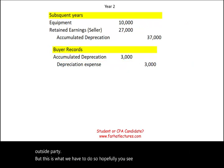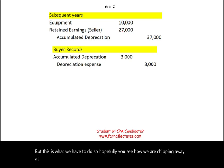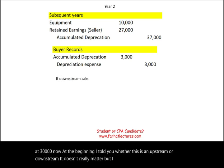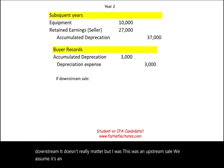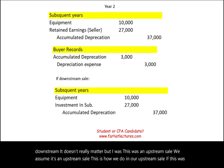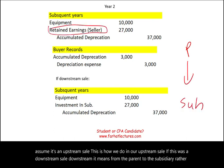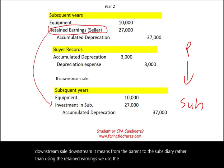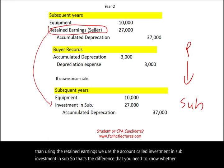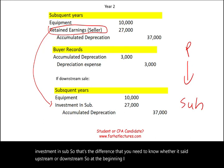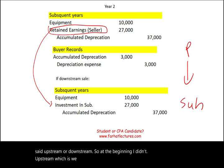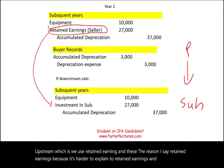At the beginning I said whether this is upstream or downstream doesn't matter for the mechanics, but here we assumed an upstream sale — from subsidiary to parent — where we use retained earnings. If this were a downstream sale — from parent to subsidiary — rather than using retained earnings, we use the account called Investment in Sub. That's the key difference between upstream and downstream.